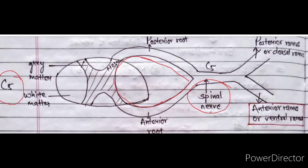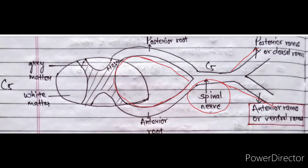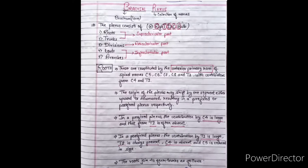For example, taking the C5 spinal nerve — when the spinal nerve divides, it forms the anterior ramus and posterior ramus. The anterior ramus is also known as the ventral ramus, and the posterior ramus is also known as the dorsal ramus. The origin of the brachial plexus takes place from the anterior primary rami of spinal nerves C5, C6, C7, C8, and T1.